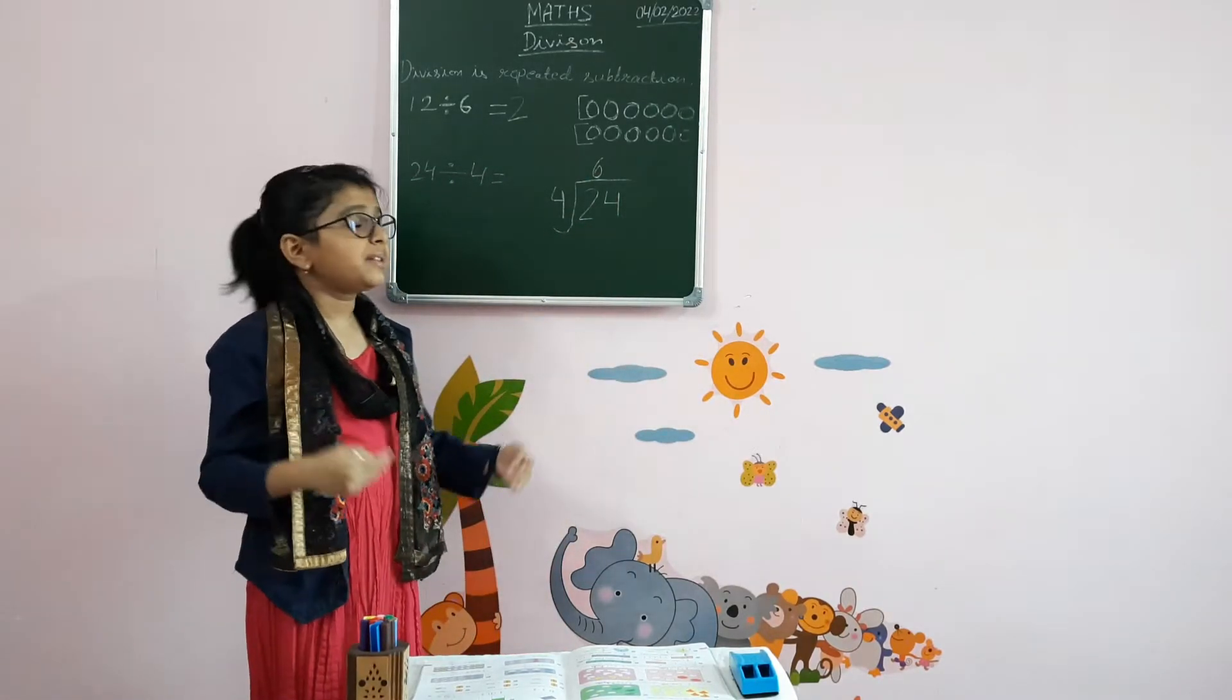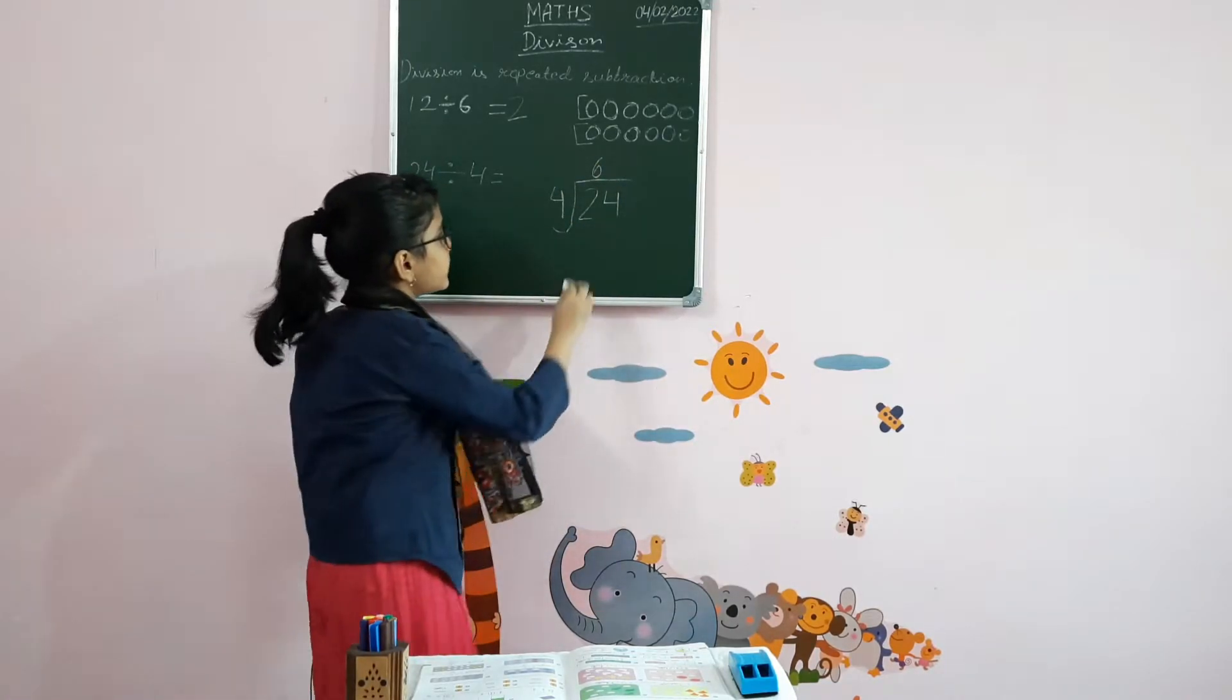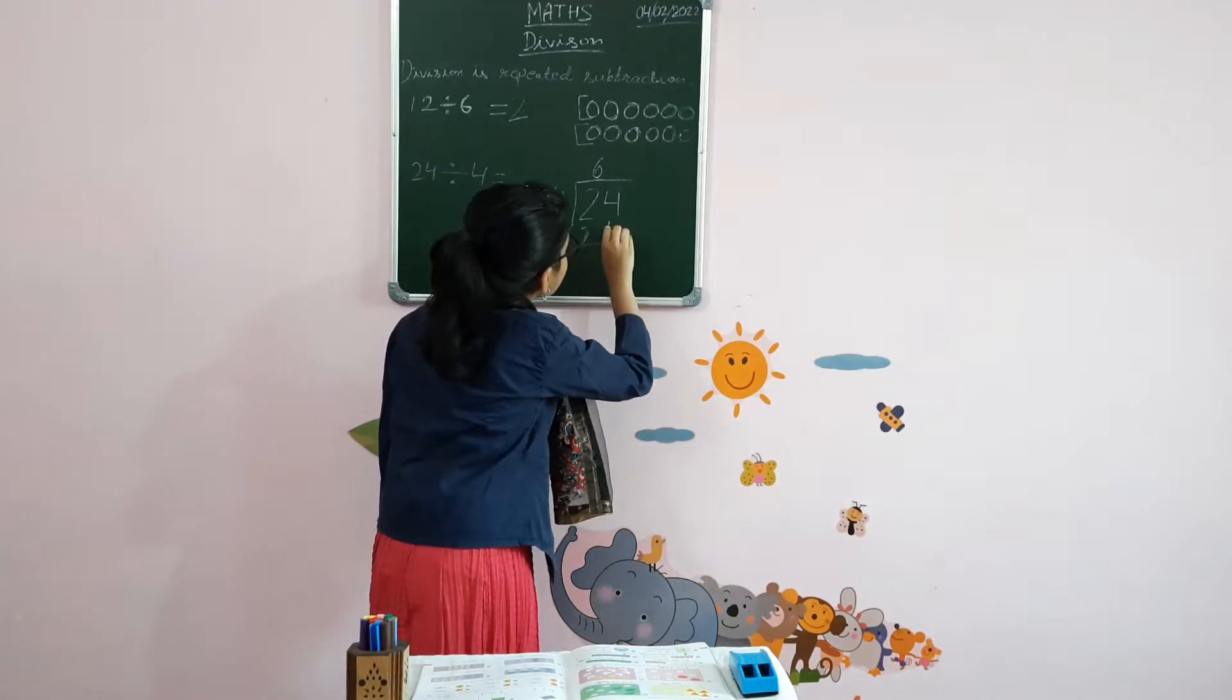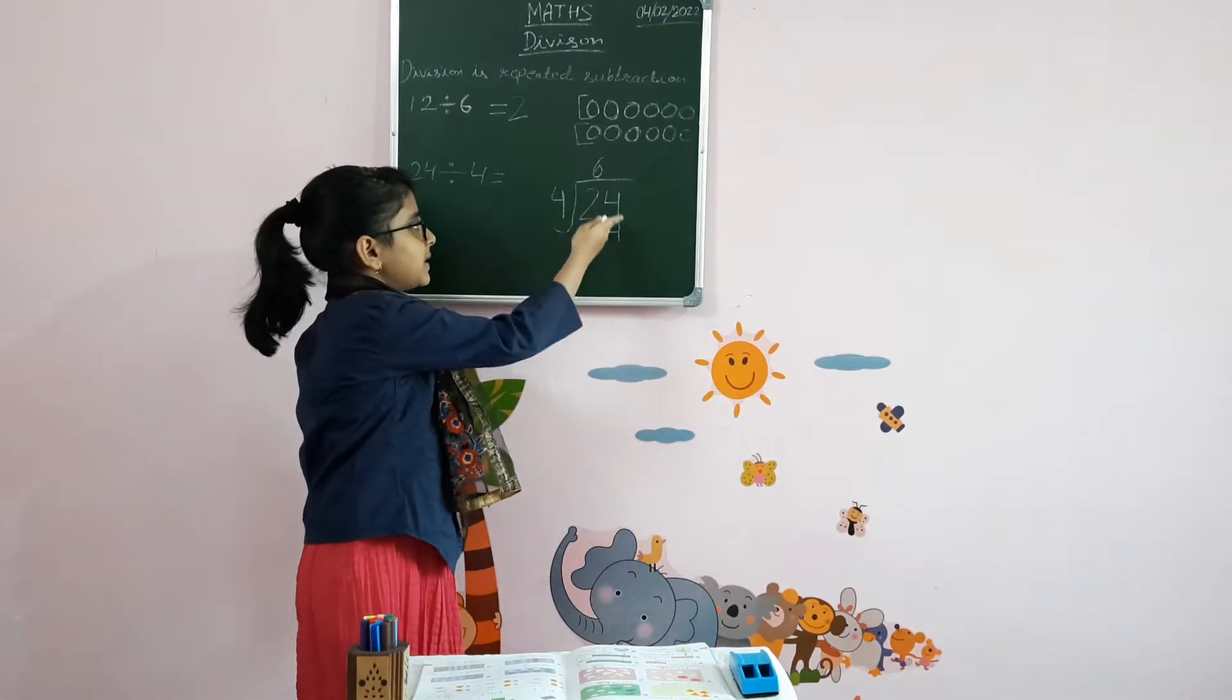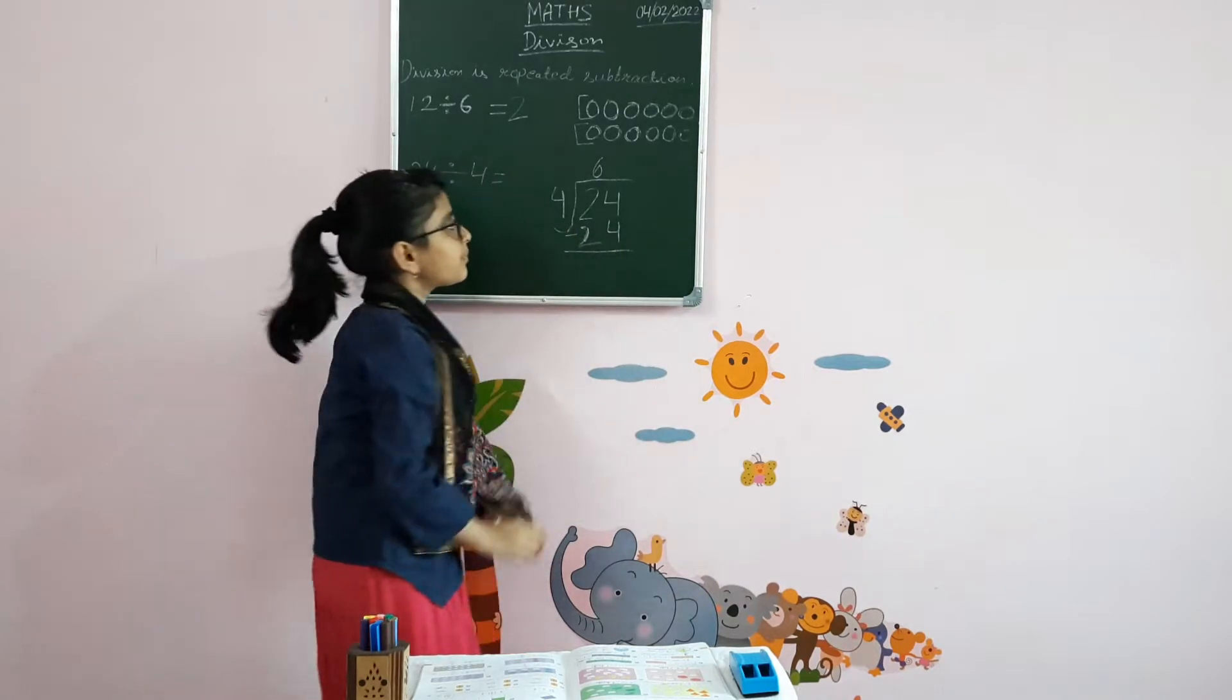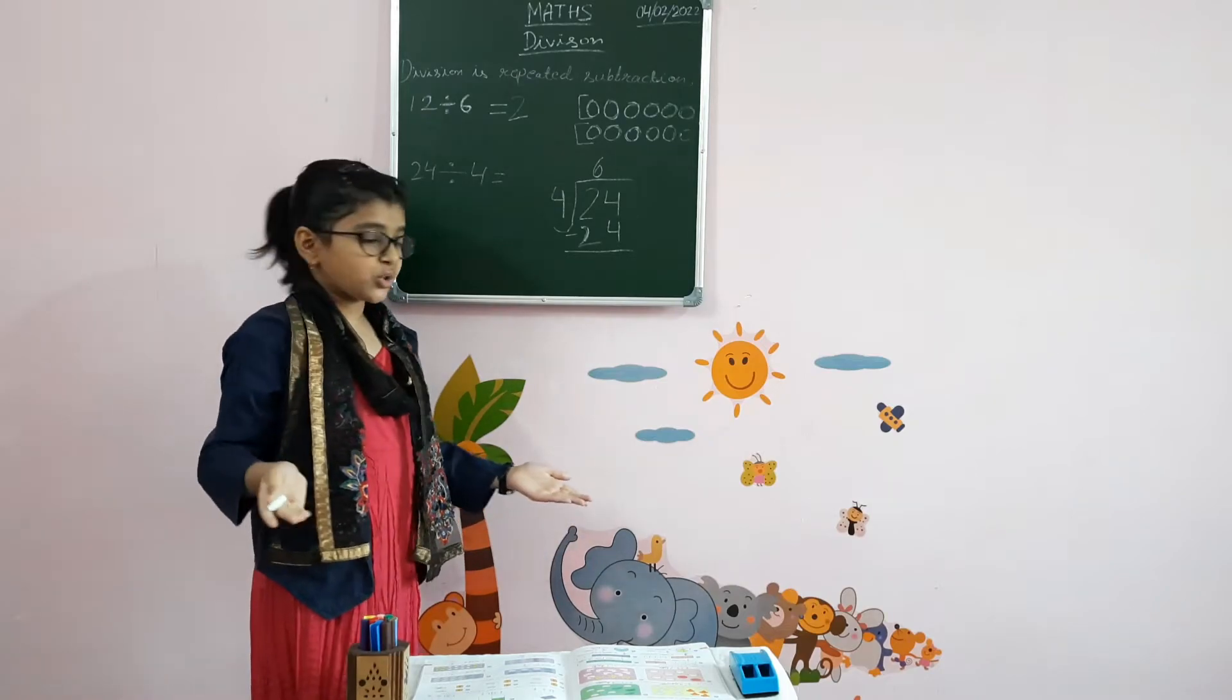Now we will subtract these two numbers. 24 minus 24 is equal to 0.